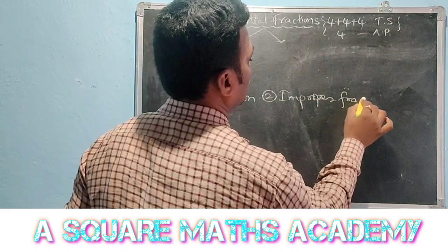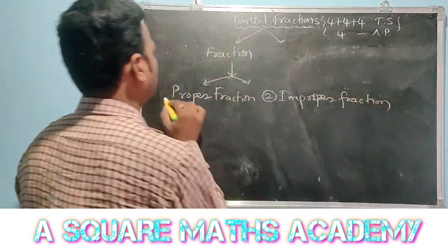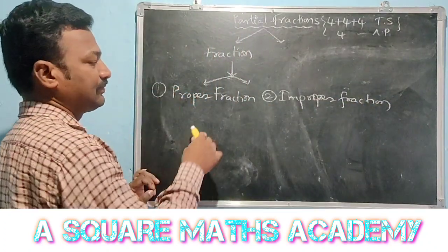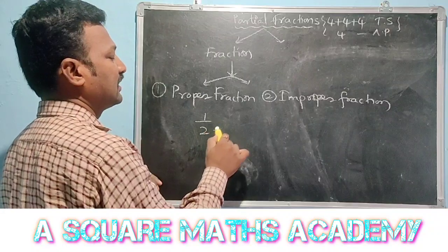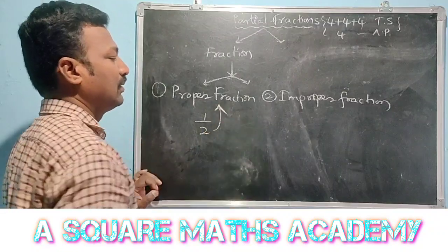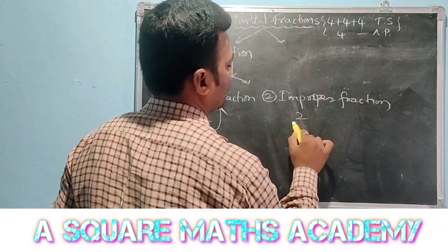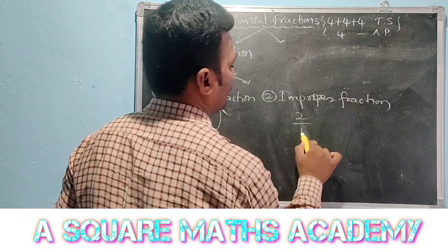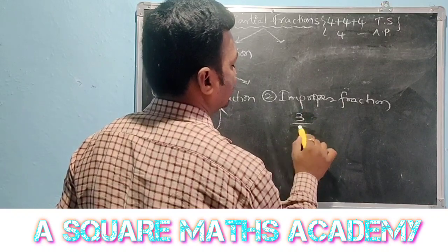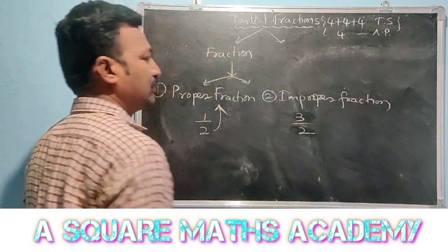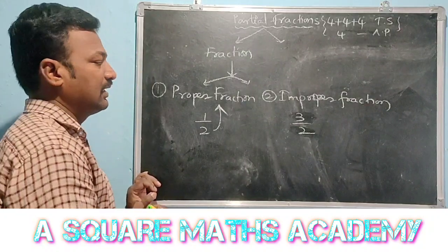So proper fractions — for example, 1 by 2 is a proper fraction. On the other hand, 2 by 1 or 3 by 2 — these are improper fractions. And 2 by 3 is a proper fraction.